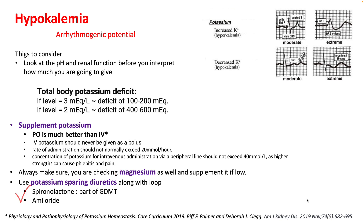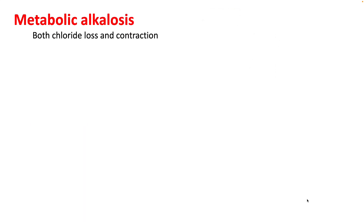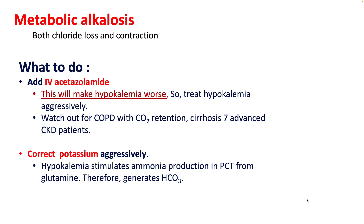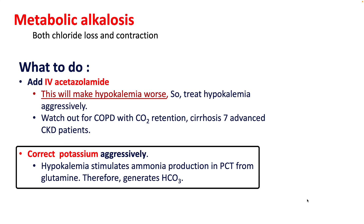Use of potassium-sparing diuretics along with loop diuretics is certainly suggested, especially in patients with hypokalemia, unless contraindications are present. Spironolactone is part of GDMT and is also a potassium-sparing diuretic. Metabolic alkalosis happens both because of chloride loss and contraction alkalosis. When you notice this, the most important thing is to correct your potassium aggressively because hypokalemia stimulates ammonia production in the PCT and generates a lot of bicarbonate.